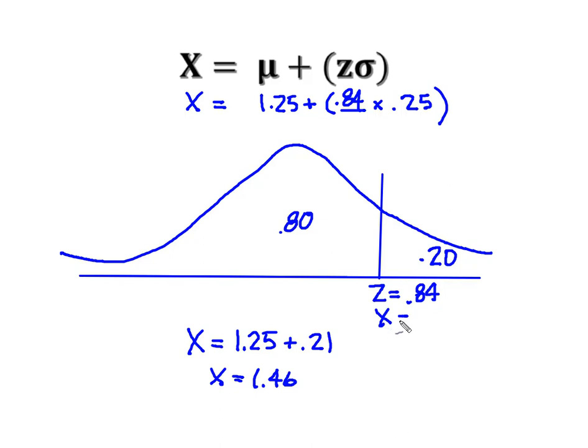So now that x value is 1.46. What I know is that 80% of the time, this pressure washer is going to use fewer than 1.46 gallons per minute.